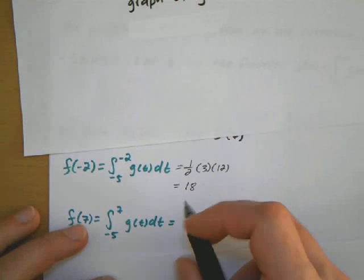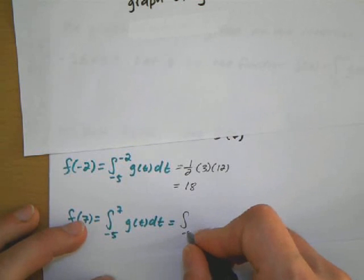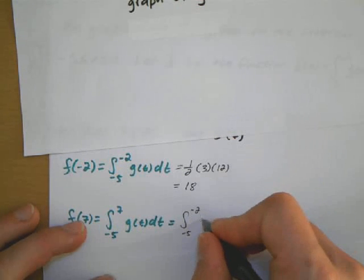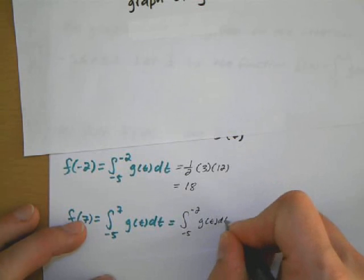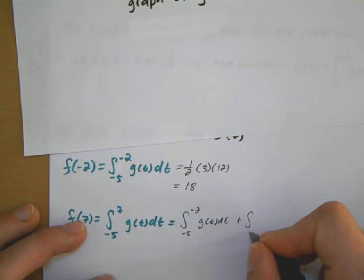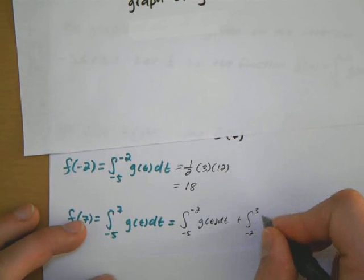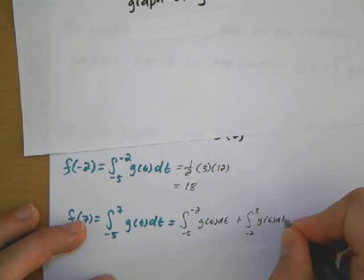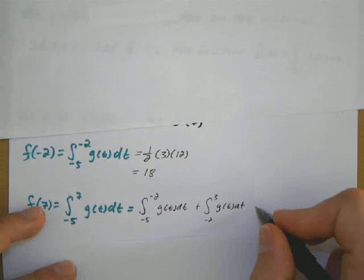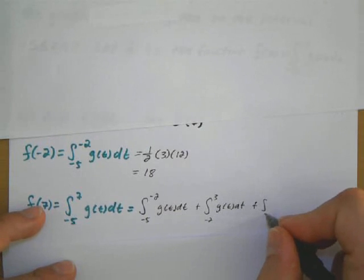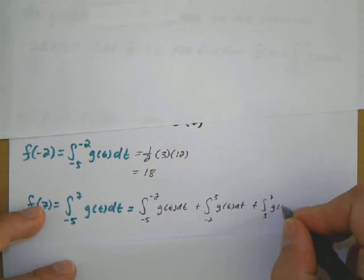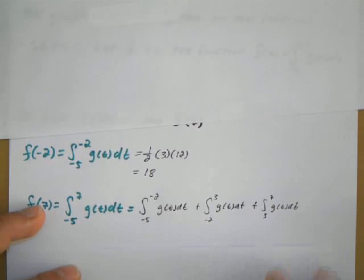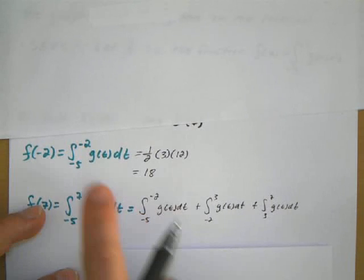I'll split this up piece by piece of negative 5 to negative 2, then I'll add the integral from negative 2 to 3, and then finally add the integral from 3 to 7. This value we already found in the previous part, so this is already going to be 18.